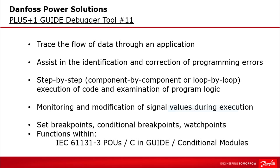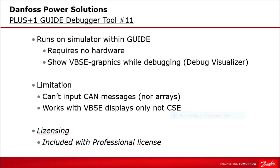The functions of the debugger tool can be used in Guide drawing code, in IEC 61131-3 PRUs, in C code, and Guide conditional modules as well. One bigger advantage of the debugger tool is that it doesn't require hardware because it runs on a simulator within Guide. This also includes the debug visualizer, which shows the resulting vector-based screen editor graphics in a separate application window while debugging. Some limitations are that CAN messages and arrays cannot be used as input, and the debugger and visualizer work only on vector-based screen editor displays, not on classic screen displays.